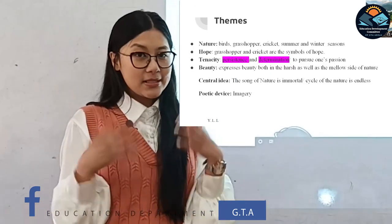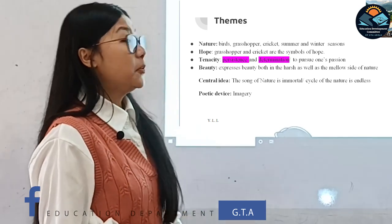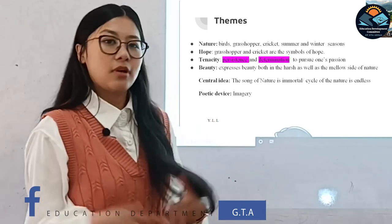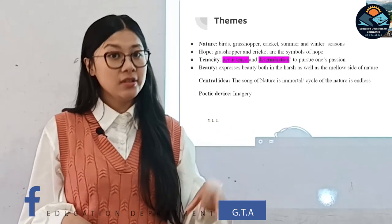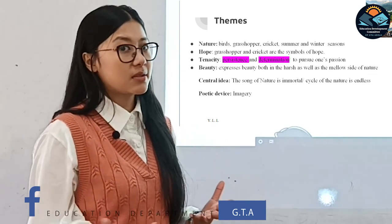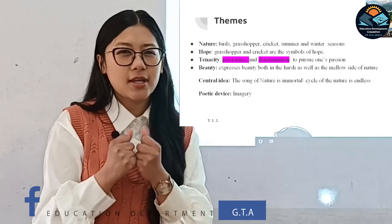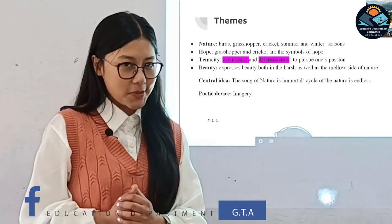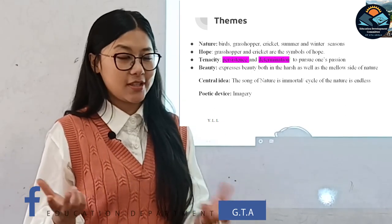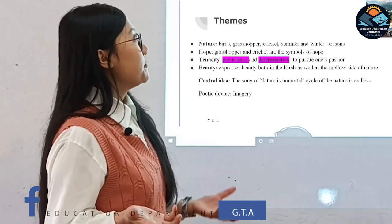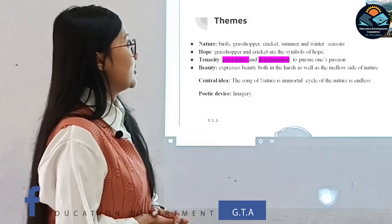Now let's talk about the themes Keats has highlighted. Number one is nature. Keats is a lover of nature, so the entire theme is based on nature. Being a Romanticist, you can see the description — the entire setting is full of summer luxury and the harshness of winter — and the objects he chose to use are also from nature: grasshopper, cricket, birds, and the summer and winter seasons.